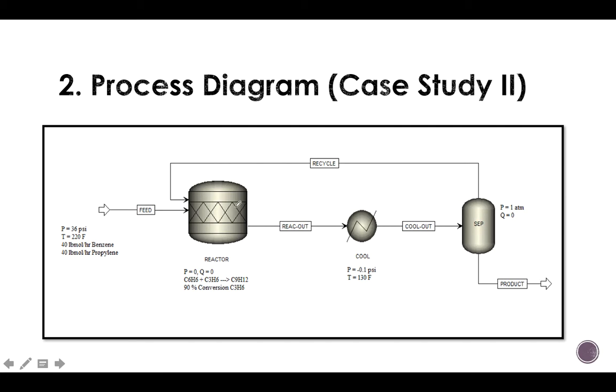Now, the process diagram looks something like this. You've got this reactor, you need to cool it, you separate it, the vapor goes as recycled, the liquid goes as product. So it's pretty easy.